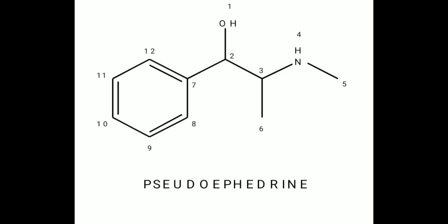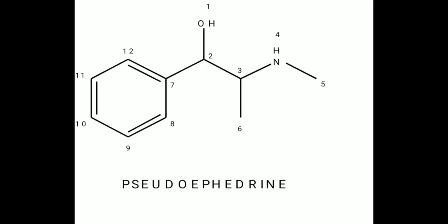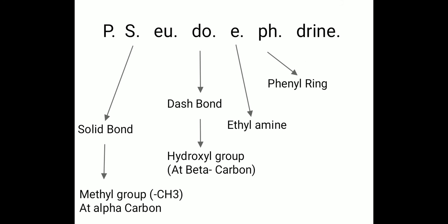The second drug is pseudoephedrine. In pseudoephedrine, 'S' indicates a solid bond, i.e., a methyl group at alpha carbon. 'D' indicates a dash bond, i.e., a hydroxyl group at beta carbon. 'E' indicates ethylamine. 'pH' indicates a phenyl ring.